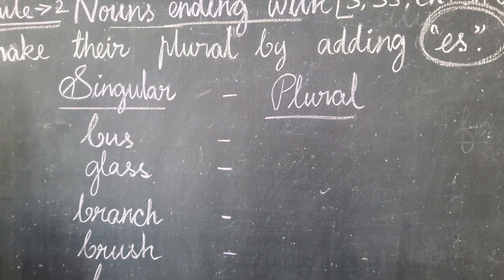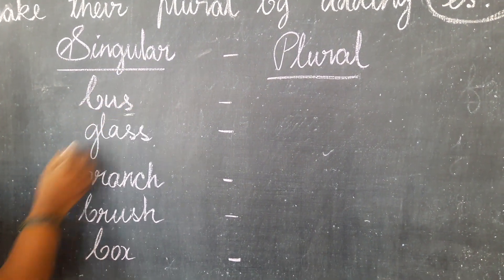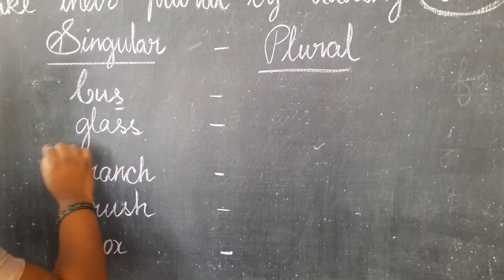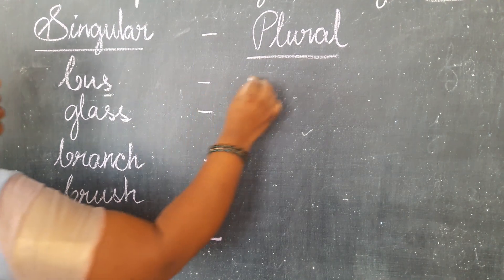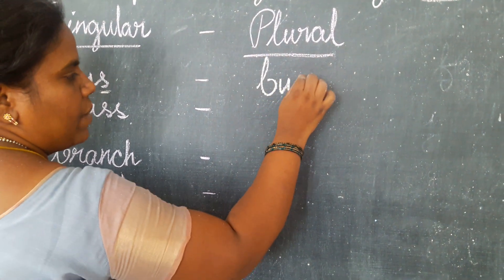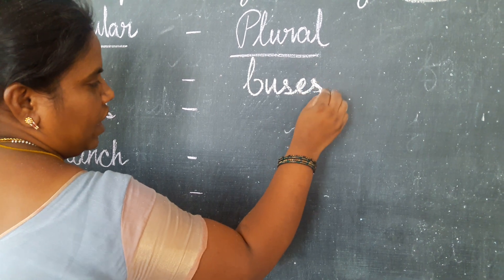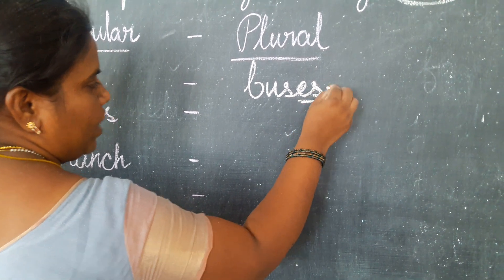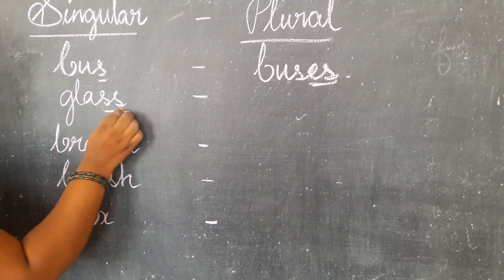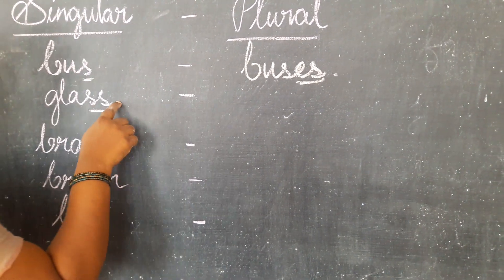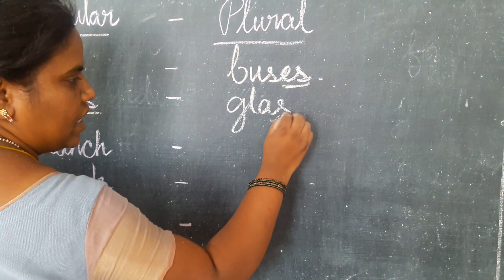Here I wrote some nouns. See the end of the letter. First one — bus. You join ES. The plural of bus is buses. Here glass — end of the letter is SS. So you join ES with the word. The answer is glasses.